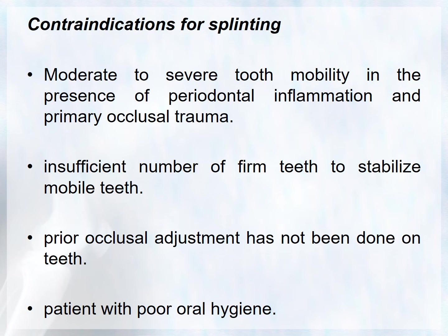The contraindications for splinting are: moderate to severe tooth mobility in the presence of periodontal inflammation, primary occlusal trauma, insufficient number of firm teeth to provide stabilization, prior occlusal adjustment not having been performed on the teeth — as occlusal adjustment must be done before splinting — and patients with poor oral hygiene.